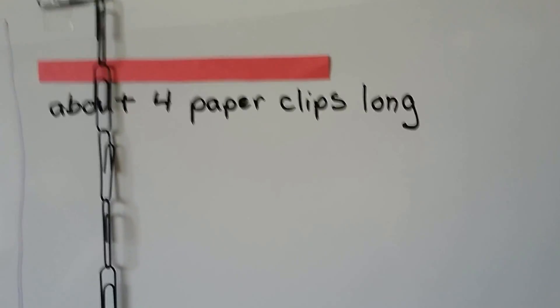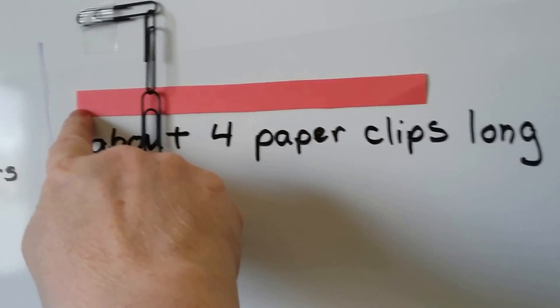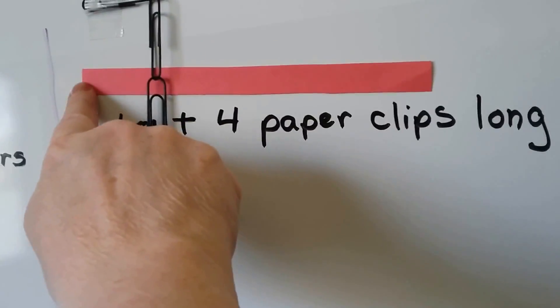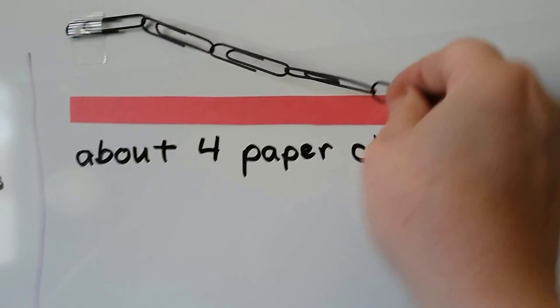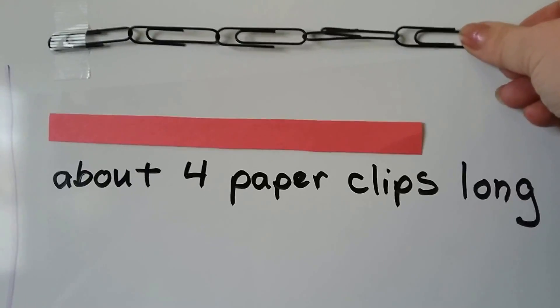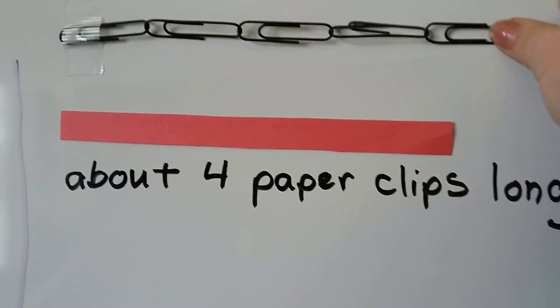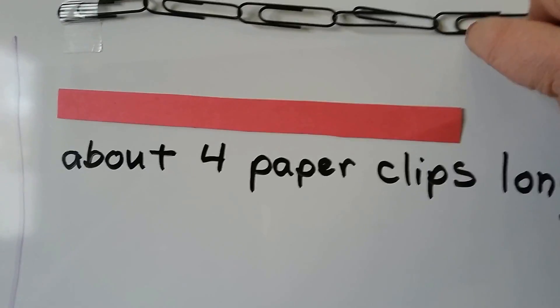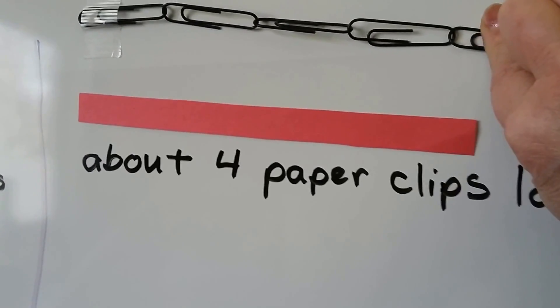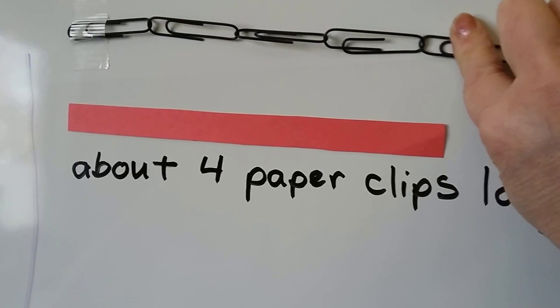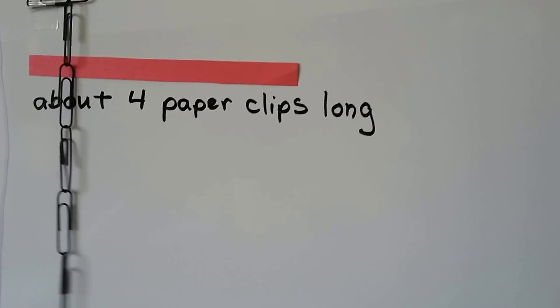Look at this red bar. We can line the measuring tool, the paper clip chain, up along the edge here so that they're even. They start at the same place. We hold it straight and we can count the paper clips. There's one, two, three, four and almost goes into this one, doesn't it? See how the paper ends here? So it really is about right there. So it's about four because it's not five. So we can say it's about four paper clips long.